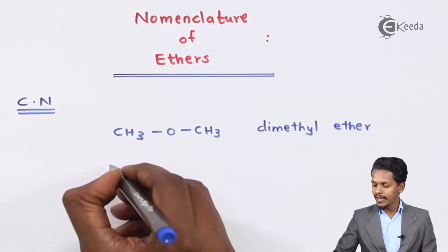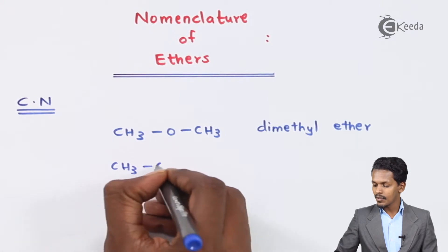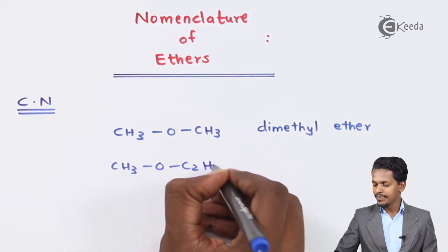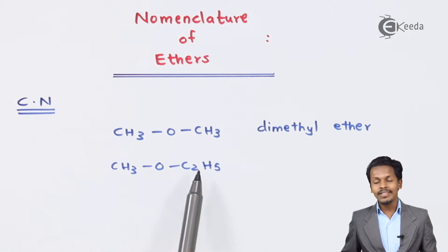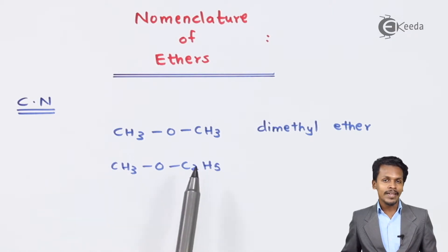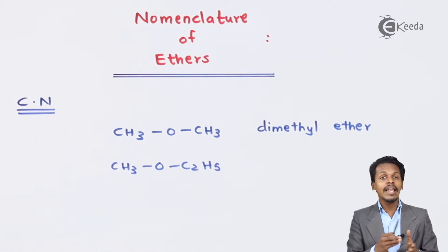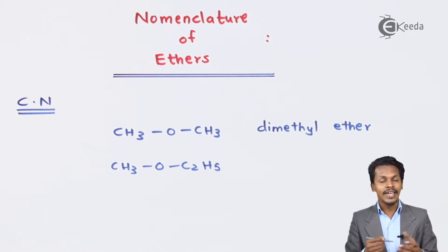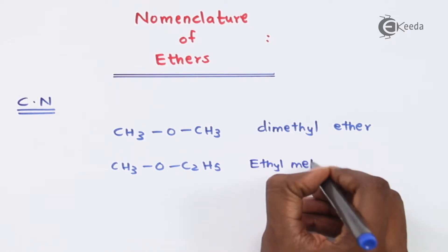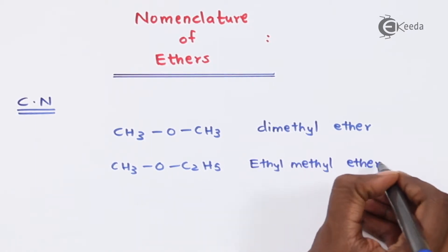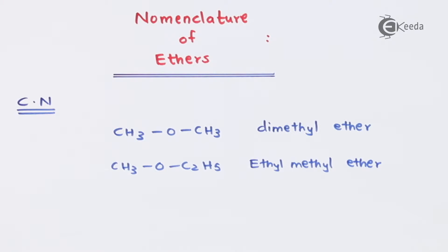Suppose we have another example like CH3OCH2CH3. In this case one is a methyl group and one is an ethyl group. So we could name it as methyl ethyl ether, but we also have to obey alphabetical order. That's the reason we name it as ethyl methyl ether. So that is basically how we give the common name to ethers — it is very easy to understand.